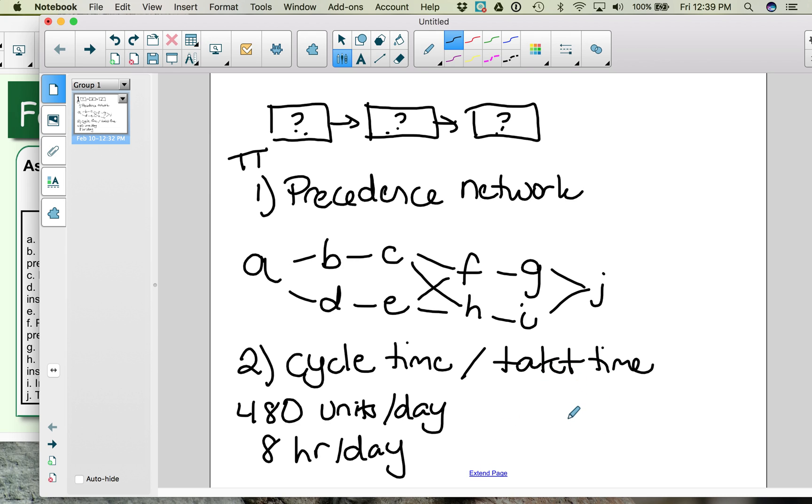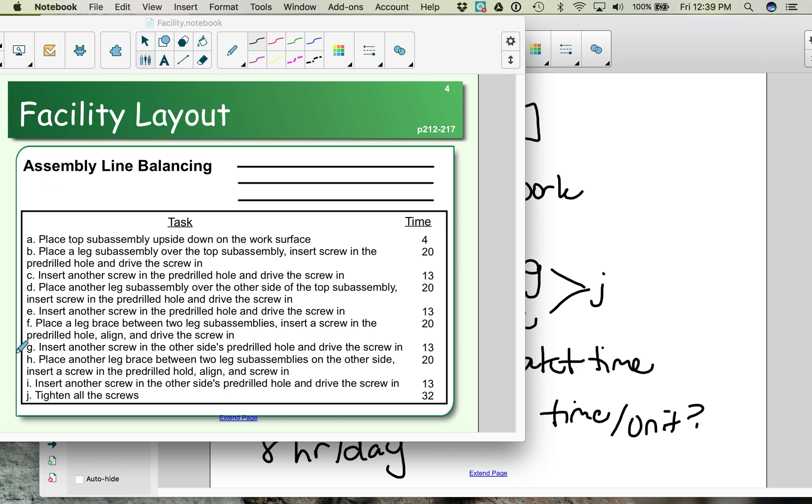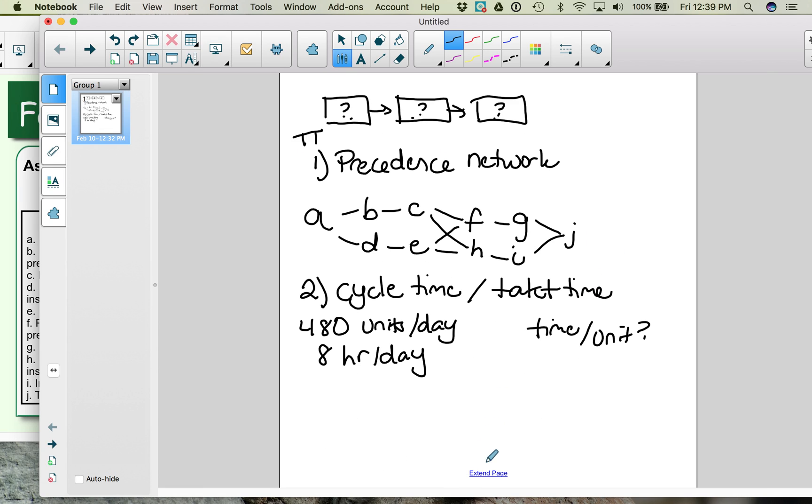So to find the cycle time or takt time, we need to figure out how much time per unit. That's what we're trying to figure out. Now in the example we're looking at, these times here are all in seconds. So instead of finding out how many hours, or fractions of hours, per unit, let's turn them into seconds. So to do that calculation, we're going to take our 8 hours in a day, multiply it times the 60 minutes in an hour, and the 60 seconds in an hour. And then divide the whole thing by the 480 units in a day. So what we end up with is that we cannot spend more than 60 seconds per table at each workstation.